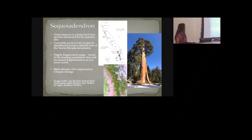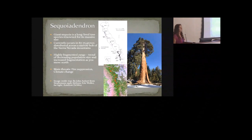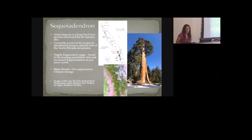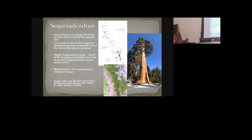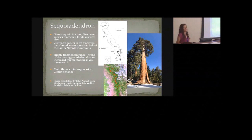Some major threats facing giant sequoia include a regeneration problem in the groves, attributed largely to fire suppression because this is a fire-dependent species, and there's a question mark regarding climate change. The populations tend to be really small and highly fragmented — traits that are not desirable for adapting to changing environmental conditions. Previous work has also suggested a long-term decline over the last couple million years with the onset of glacial cycles, meaning population size has been reducing over time.